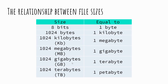It's worth mentioning that 1024 comes from counting up in multiples of two as we do in binary: 1, 2, 4, 8, 16, 32, 64, 128, 256, 512, 1024 — which is where we get 1024 as the unit of measurement.